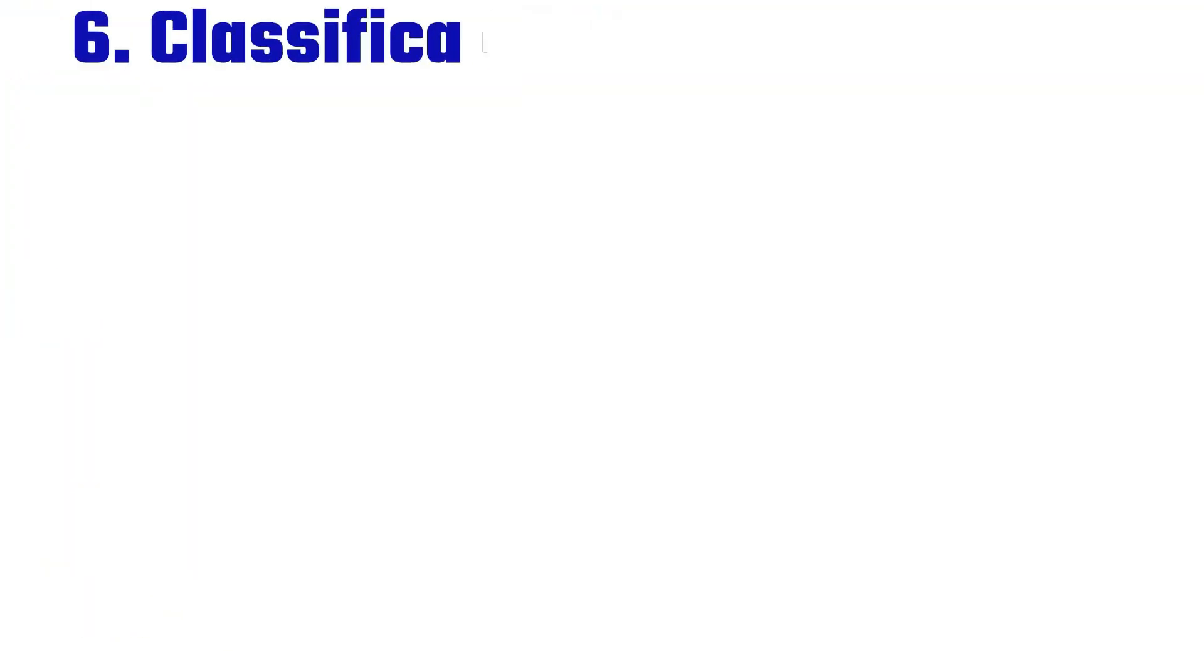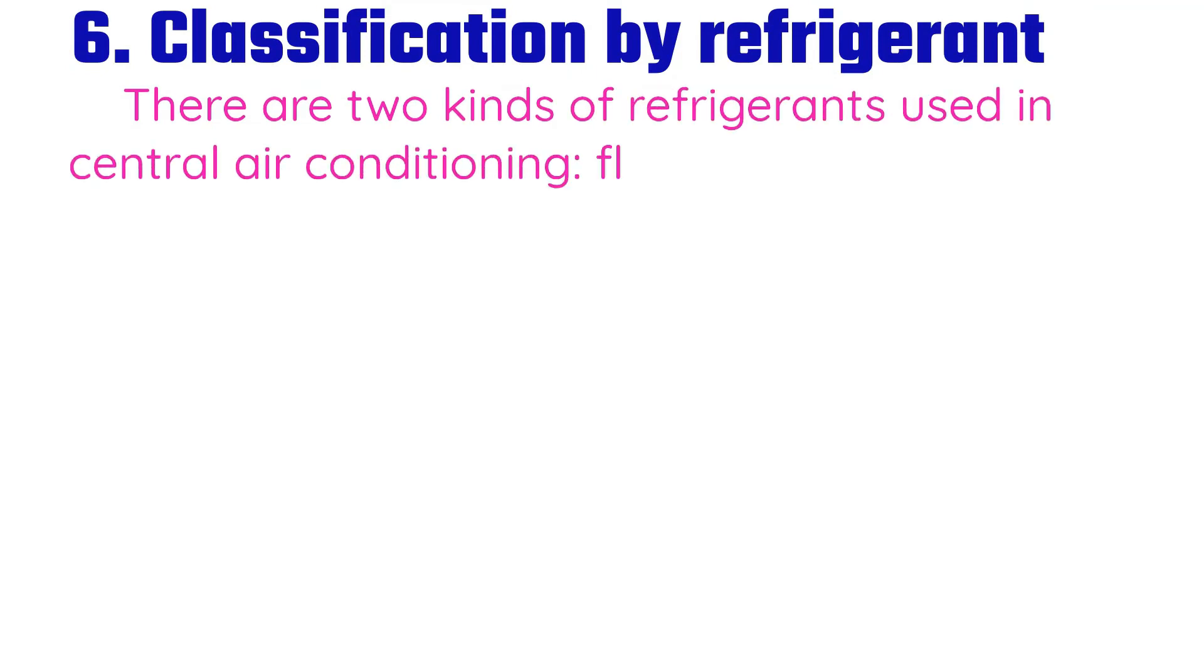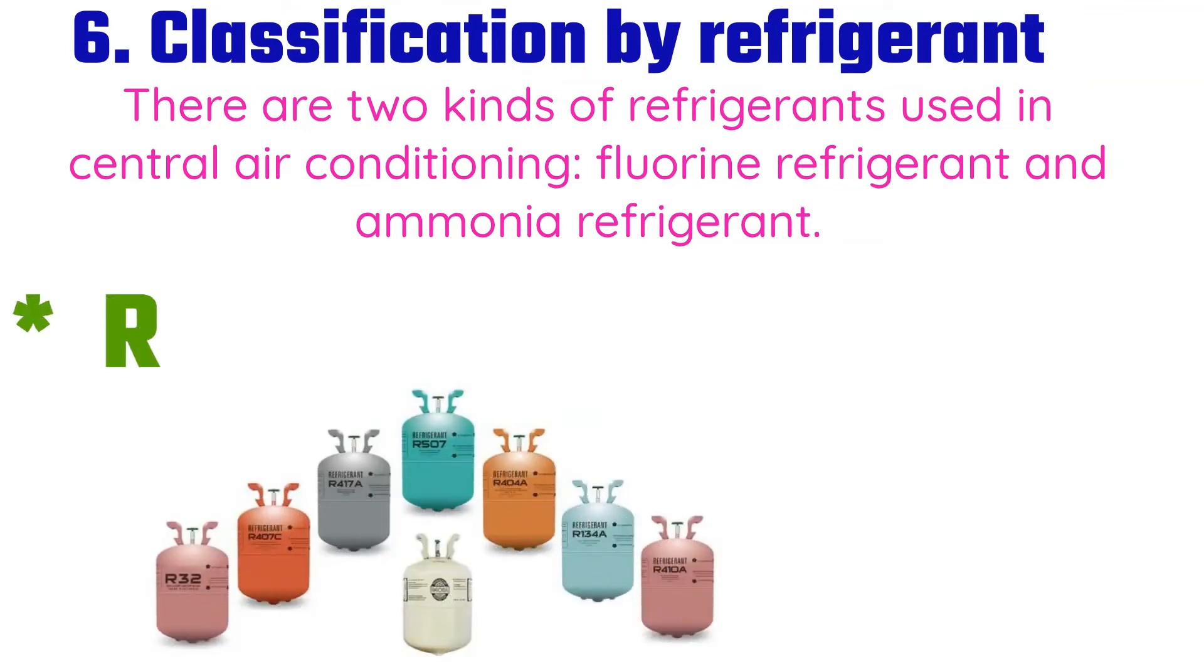Sixth classification by refrigerant: there are two kinds of refrigerants used in central air conditioning - fluorine refrigerant and ammonia refrigerant.